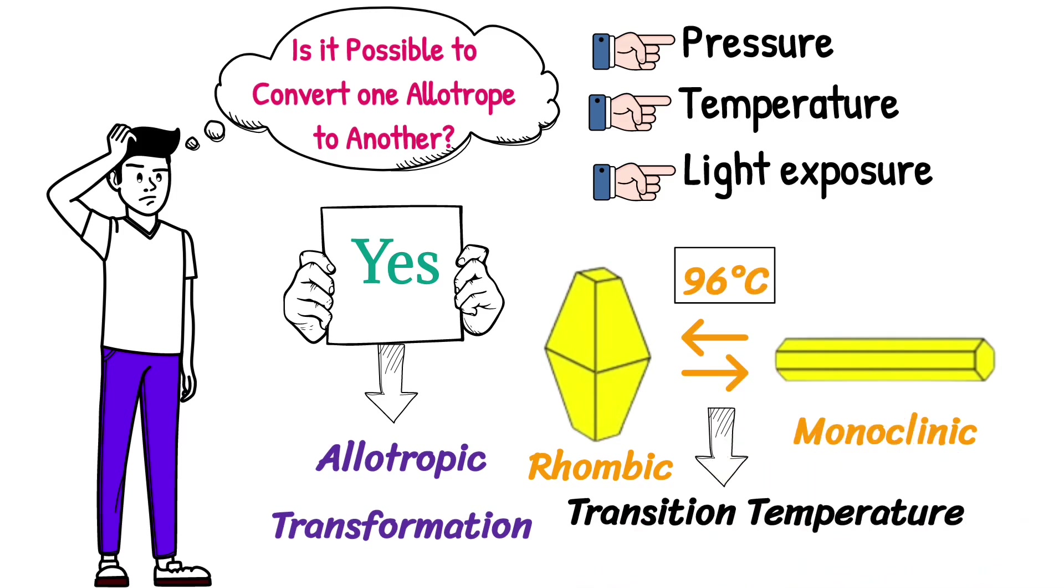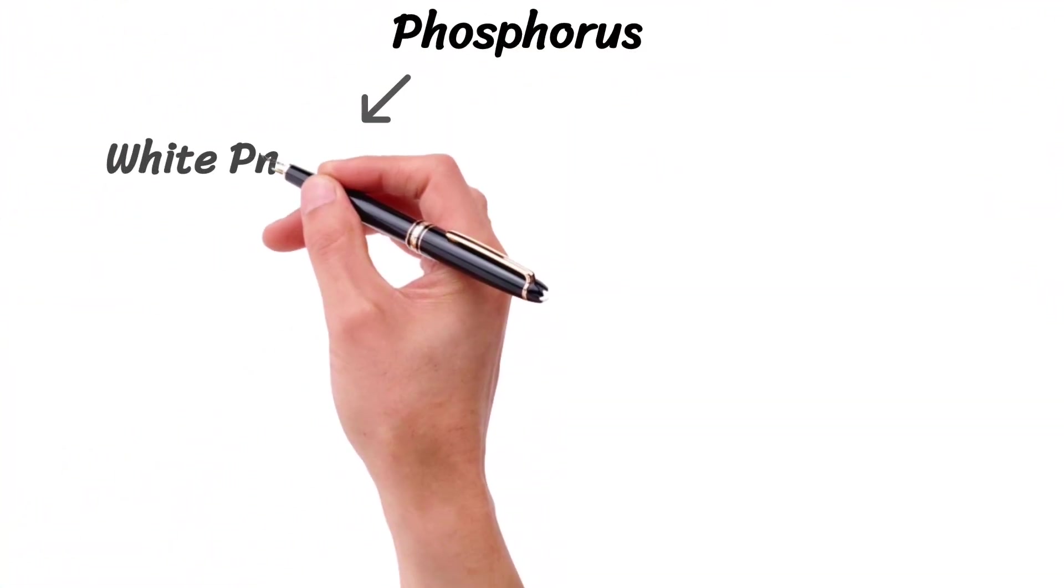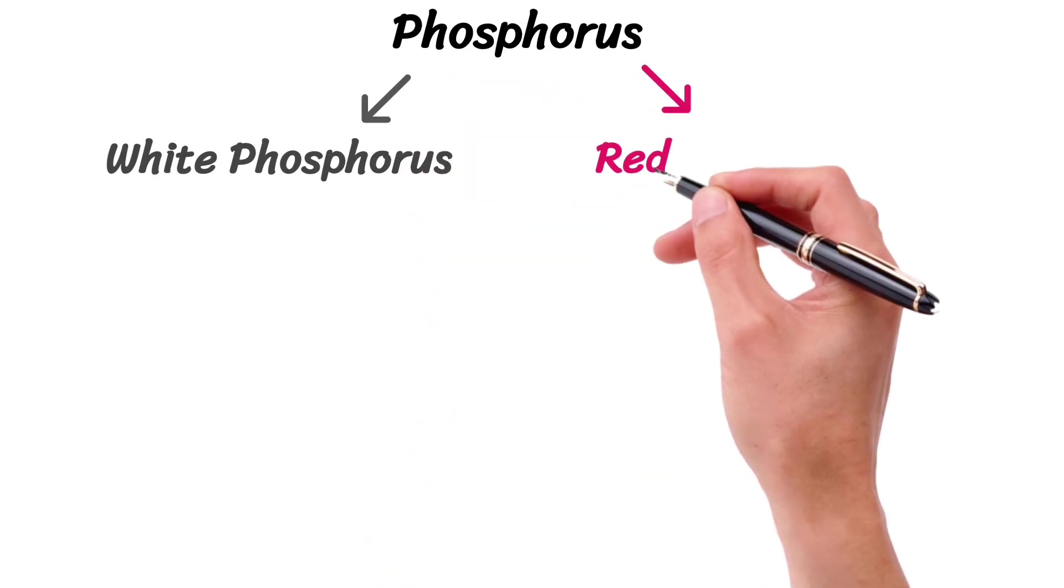So does the temperature at which one allotrope changes into another. Let me give you more examples. Phosphorus exists in two allotropic forms: white and red phosphorus.